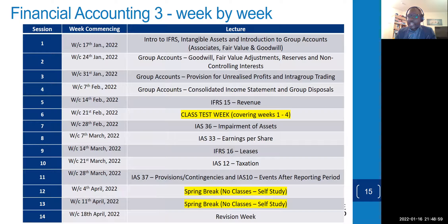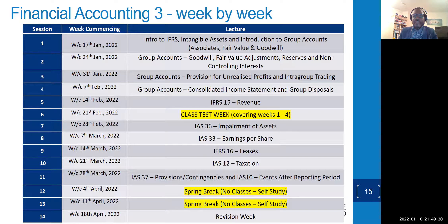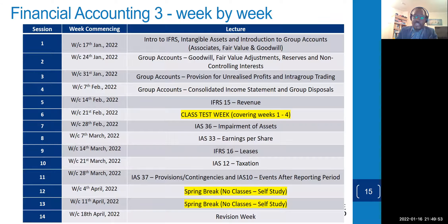In the first week, we'll look at introduction to IFRS and intangible assets in detail, plus a brief introduction to group accounts covering control, fair value, goodwill, and associates. Week two, we delve deeper into group accounts — goodwill, fair value adjustments, reserves, and non-controlling interest. Subsequently, we cover provision for unrealized profit, intergroup trading, group income statement, and group disposals. Then IFRS 15 on revenue, followed by impairment of assets, EPS, leases, taxation, contingencies, and events after reporting. Then we go for the spring break, revision, and exams.